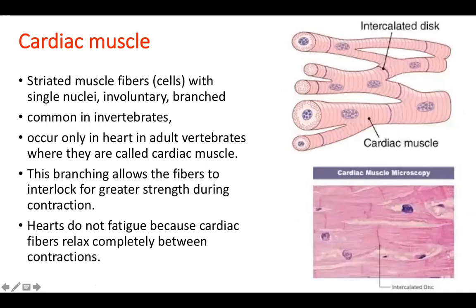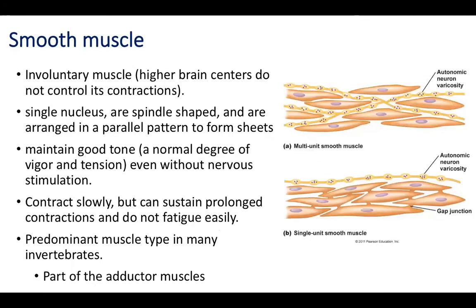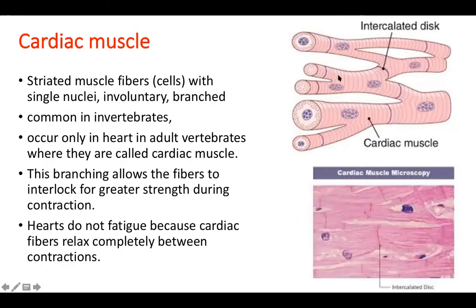Then you have cardiac muscles. You can see the dark and light bands — these are the striations. The proteins overlap in this way so that you have specific striations or streaks. Cardiac muscle cells have a single nucleus. These are involuntary.